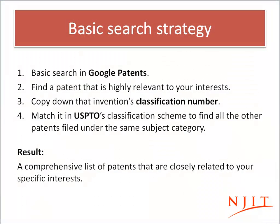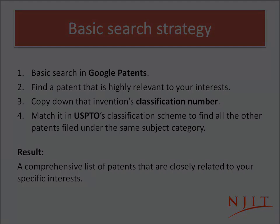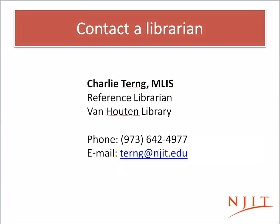So just to summarize: the strategy here is to first search in Google Patents to find a relevant patent, use the classification number to find it over at USPTO's site using their classification scheme, and then you'll have a list of all the patents in that subject area. If you want to view the patents more easily, copy the specific patent number and look it up again in Google Patents. I hope that helps, and if you have any questions, feel free to contact the NJIT Library for further information.